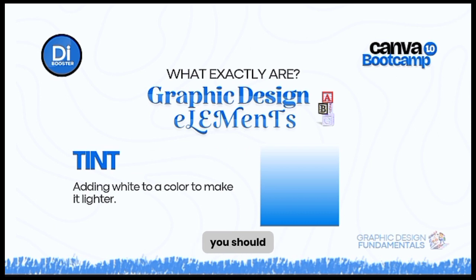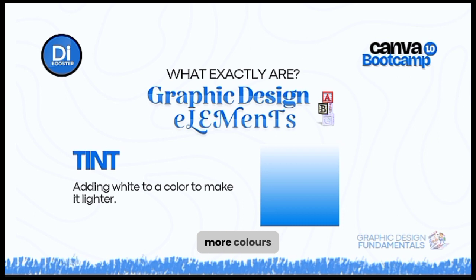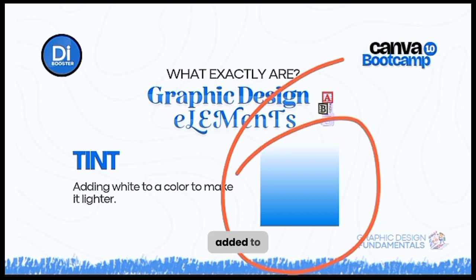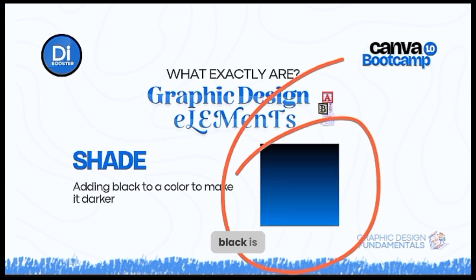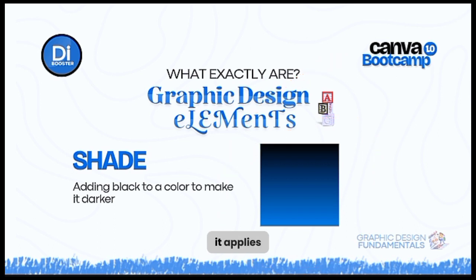Now for color terms you should know. A tint is when you add white to a color to make it lighter — for example, adding white to blue gives you a blue tint. A shade is when you add black to a color to make it darker. So when white is added it's called a tint; when black is added it's called a shade. This applies to all colors, not just blue.